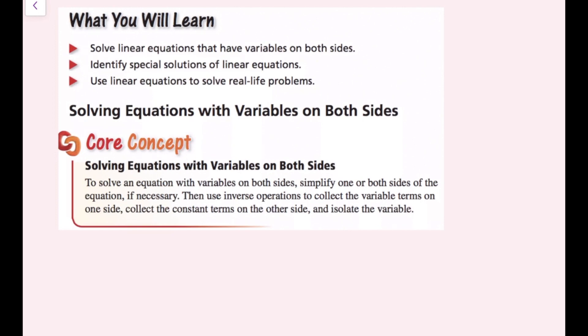The core concept here: to solve an equation with variables on both sides, simplify one or both sides of the equation if necessary. That means combine like terms, or use the distributive property, or anything else to make sure each side is as simplified as possible. Then use inverse operations to collect the variable terms on one side, collect the constant terms on the other side, and isolate the variable.